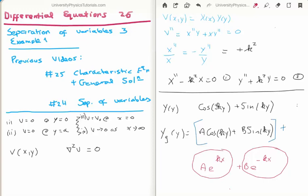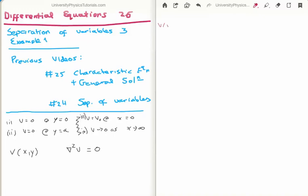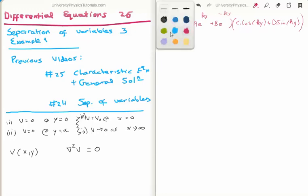Now we know the solutions, so we can write the general solution for v. V as a function of x and y equals a times e to the plus kx plus b times e to the minus kx, multiplied by c times cosine ky plus d times sine ky. This is the general solution to Laplace's equation in two dimensions, and all problems in two dimensions will look the same up to this point.